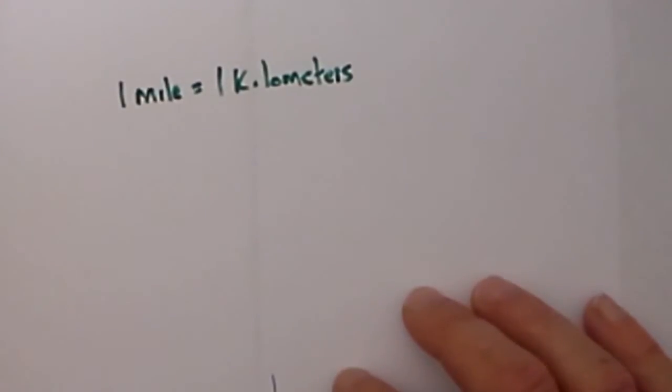I know that there are 5,280 feet in a mile. I know that 1 inch is equal to 2.54 cm and I know that there are 12 inches in a foot. That should give me enough to solve this.